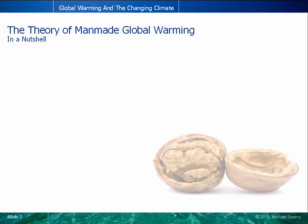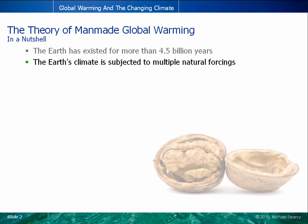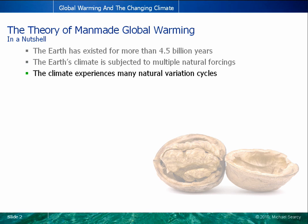We know that the Earth has been around for more than 4.5 billion years, and that at any given time, the Earth's climate is subjected to multiple natural forcings, from changes in our orbit around the sun to volcanic eruptions. As a result, we know that the climate experiences many natural variation cycles, with both colder and warmer conditions.